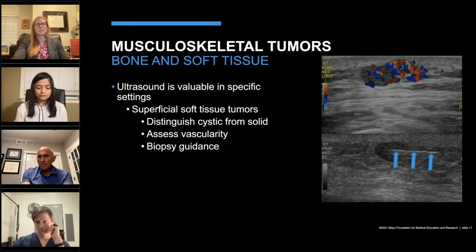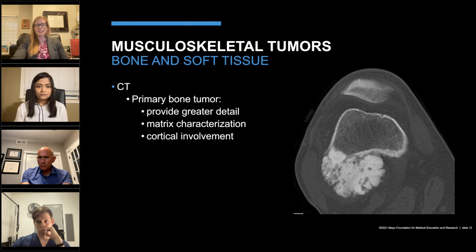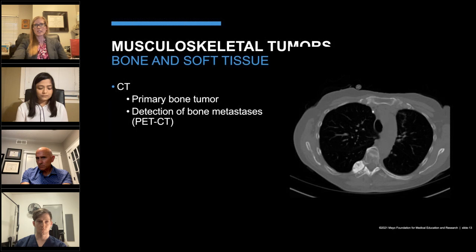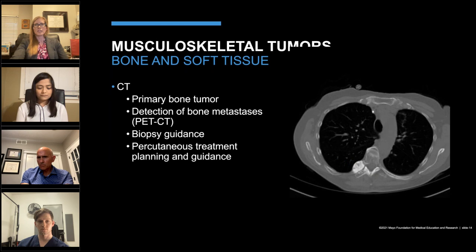CT is another important modality, particularly helpful for bone tumors, providing greater detail with matrix characterization and delineation of the cortex. On this axial CT image, we see an extremely and diffusely sclerotic mass on the posterior cortex of the distal femur with a dense osteoid matrix; though the bulk is extracortical, a small portion extends into the medullary cavity — features that strongly favor parosteal osteosarcoma. When there's a known primary malignancy like breast, prostate, or lung cancer, CT can detect metastatic bone lesions, and combining CT with PET imaging allows for even greater sensitivity.